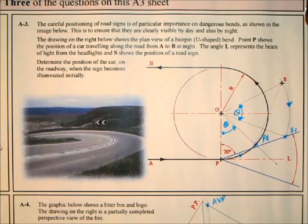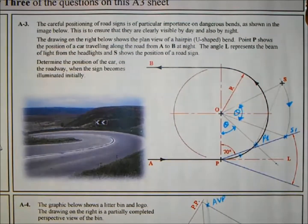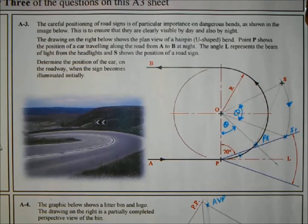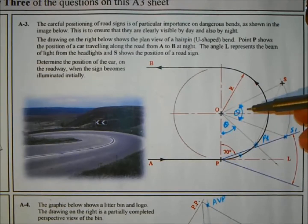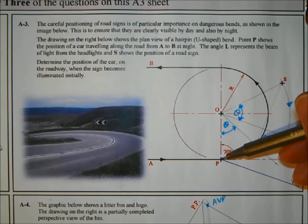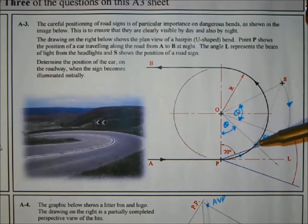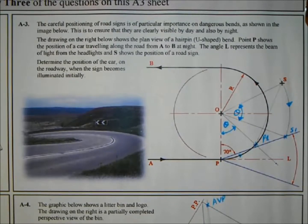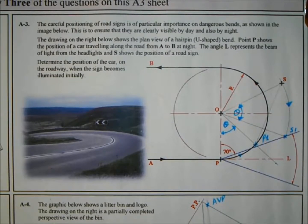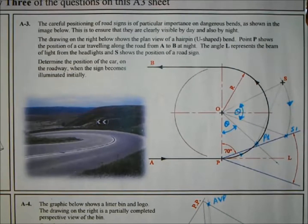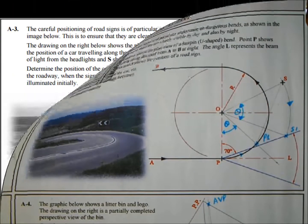That's the question done. Rather than trying to rotate the car first, what you do is rotate the sign down to where it initially hits the beam of light. Once you find that angle, rotate the car about the bend that many degrees and that will show you where it first initially sees the sign. I hope that helped, and if it did leave a like. If you'd like to see other questions done, please leave a comment in the comment section below. Thank you and good luck.